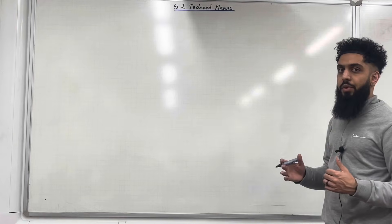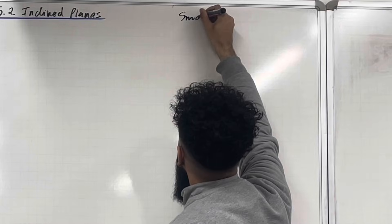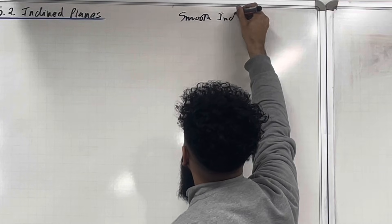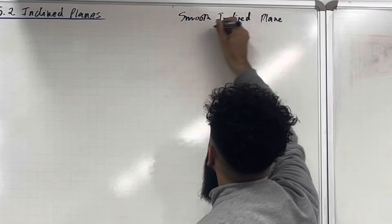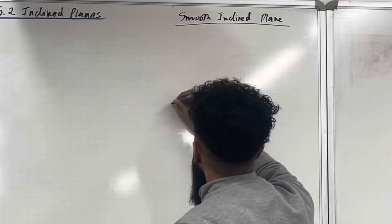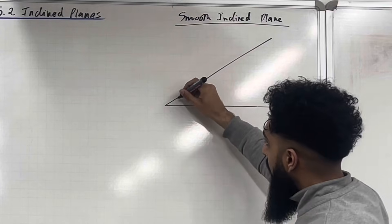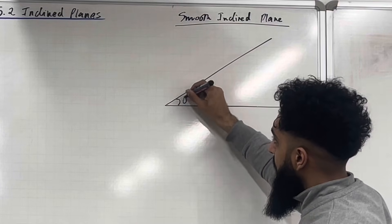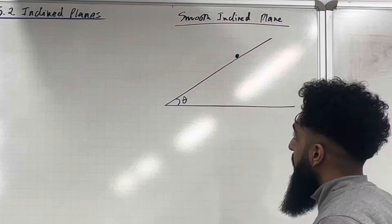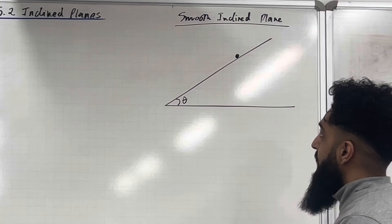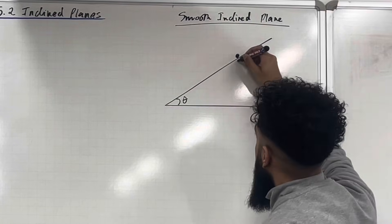I'm going to start off with a smooth inclined plane. So here is my smooth inclined plane. Suppose the angle to the horizontal is theta. Here is the particle on the plane. Suppose the mass of the particle is m, hence the weight will be mg, acting vertically downwards.